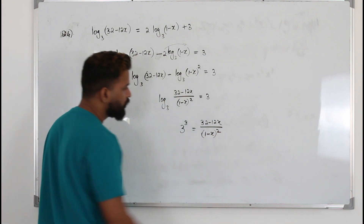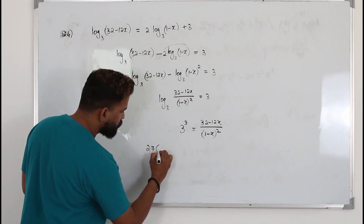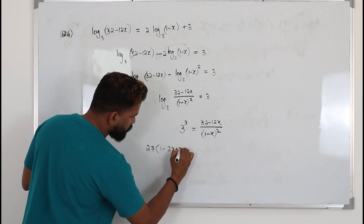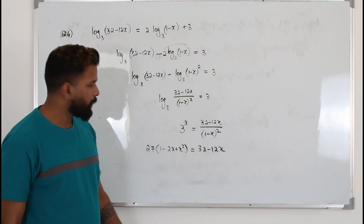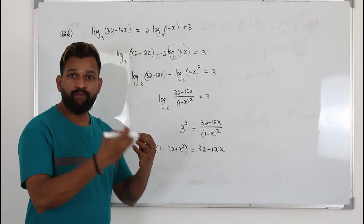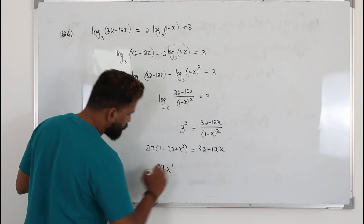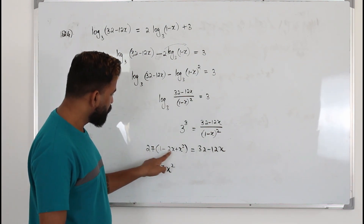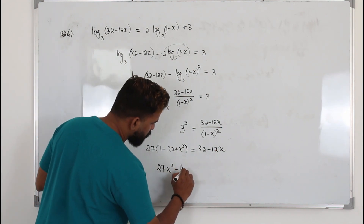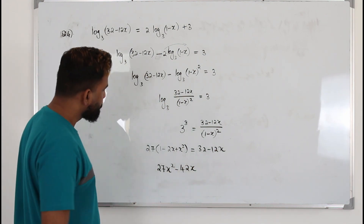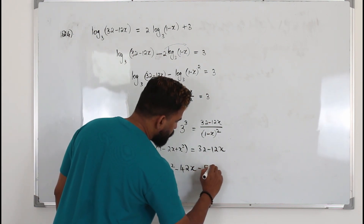So 3 cubed equals (2 minus 12x) over (1 minus x) whole squared. 3 cubed is 27. Bring this across, so you'll have 27 times (1 minus x) squared. Expand it: a squared minus 2ab plus b squared equals 32 minus 12x. Open the bracket and frame a quadratic equation. You'll get 27x squared minus 54x plus 12x plus 27 minus 32, which gives 27x squared minus 42x minus 5 equals 0.